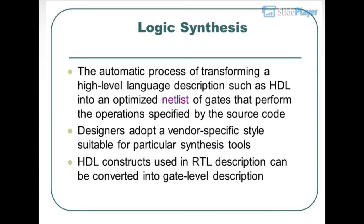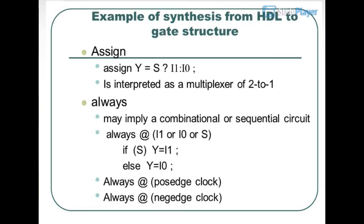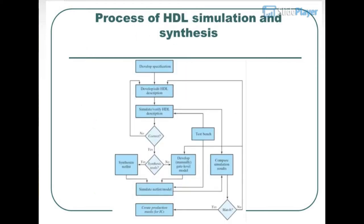Designers adopt a vendor-specific style suitable for particular synthesis tools. HDL constructs used in RTL description can be converted into gate-level description. For example, 'assign Y = S ? I1 : I0' is interpreted as a 2-to-1 multiplexer. An always block may imply combinational or sequential circuits: 'always @(I1 or I0 or S)' or 'always @(posedge clock)' or 'always @(negedge clock)'. This covers the process of HDL simulation and synthesis.